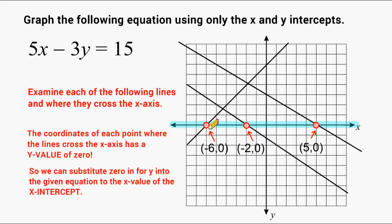Let's take a look at this point right here. This point is directly on negative six on the x-axis, but it is not located above zero on the y-axis or below zero. We would say that this point is right at zero on the y-axis, as is this point and this point as well. So any point that is located on the x-axis will have a y-value of zero.